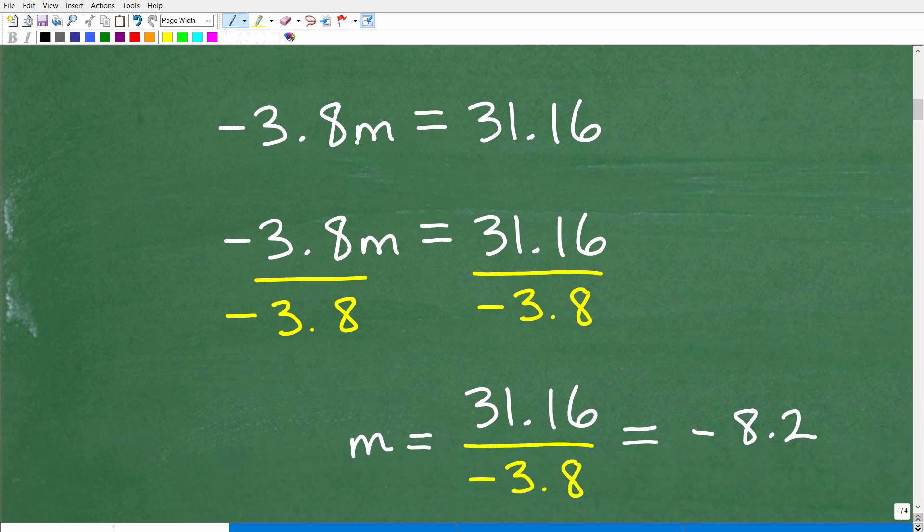So we have negative 3.8 M is equal to 31.16. So, in algebra, to solve for this variable, I'm going to divide both sides of the equation by negative 3.8. If you don't understand what I'm doing here, you need to review basic linear equations. You can find all this in my pre-algebra course. So, hopefully, all of you are saying, yes, I knew that was the steps. We have to divide both sides by negative 3.8.